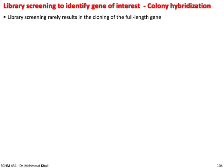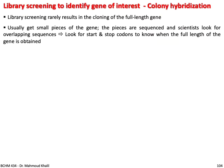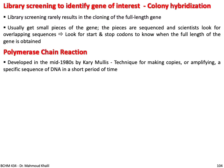Library screening rarely results in cloning of full-length genes — you usually get small fragments. These pieces are sequenced, and scientists look for overlapping sequences and identify start and stop codons to determine when the full-length gene is obtained. PCR (polymerase chain reaction) is a very useful technique in recombinant technology, developed in the mid-1980s by Kary Mullis. It is a technique for making copies of or amplifying a specific DNA sequence in a short period of time.